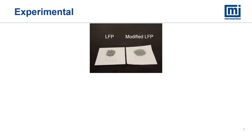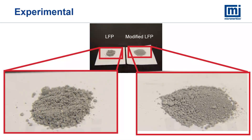Starting with a visual inspection, we can see that the materials look a little bit different. The LFP on the left, which is the unmodified LFP, looks to be more granular — maybe some more fines are present. The modified LFP on the right looks like there may be some larger particles, possibly what looks to be aggregates or agglomerates. You can kind of visually see that they're slightly different.